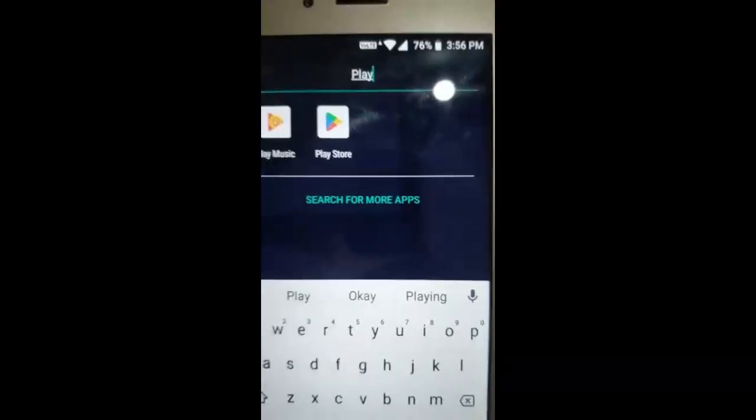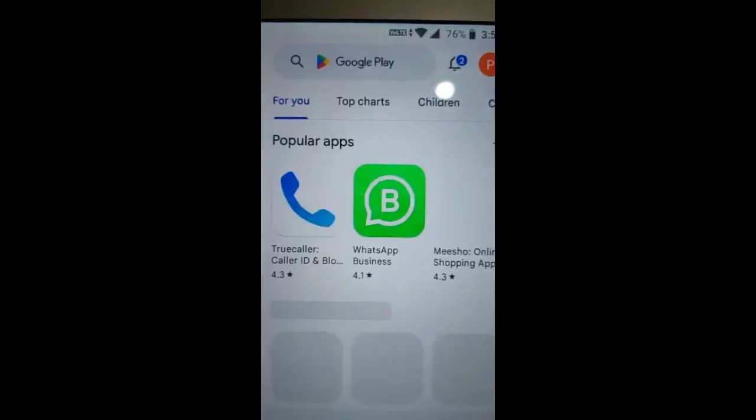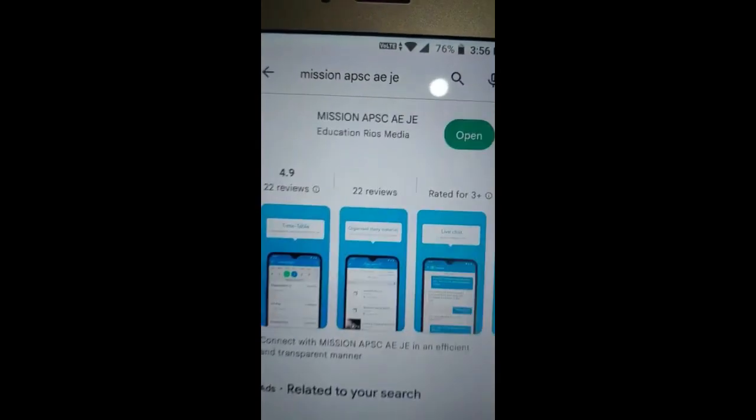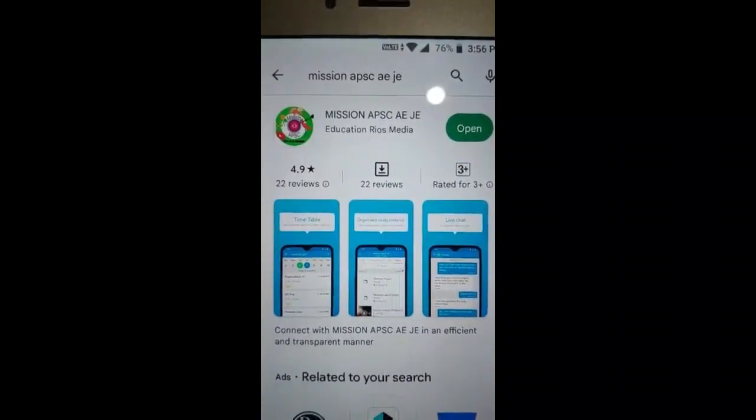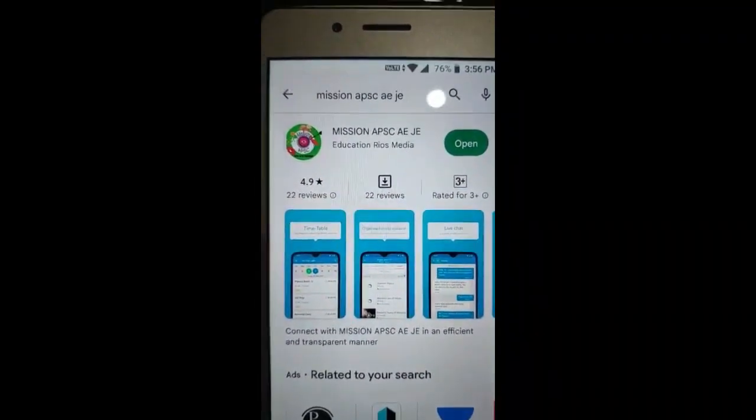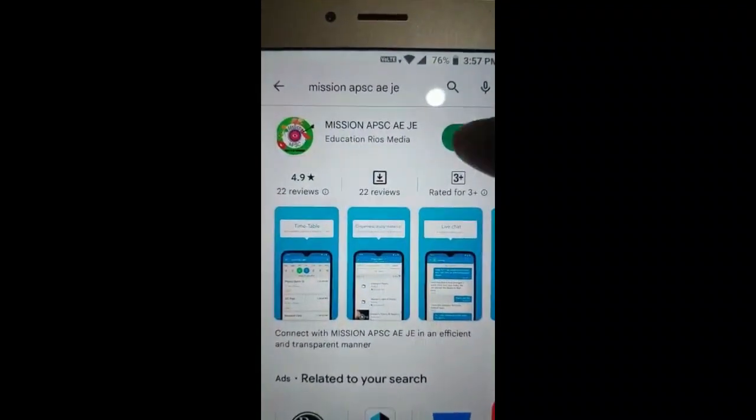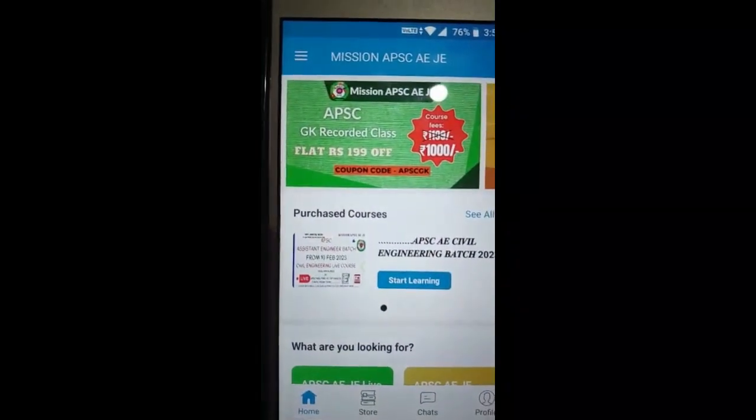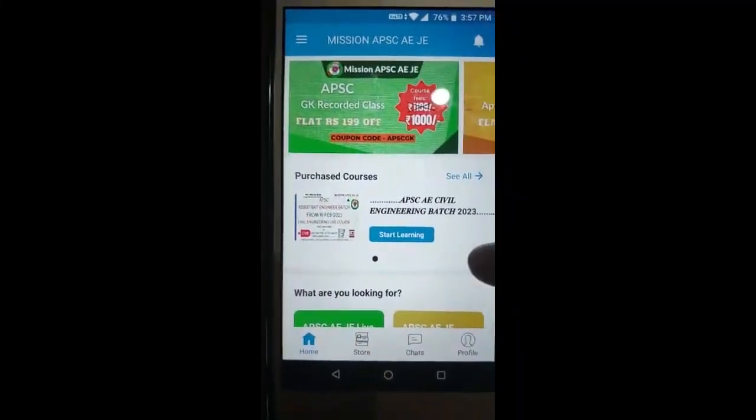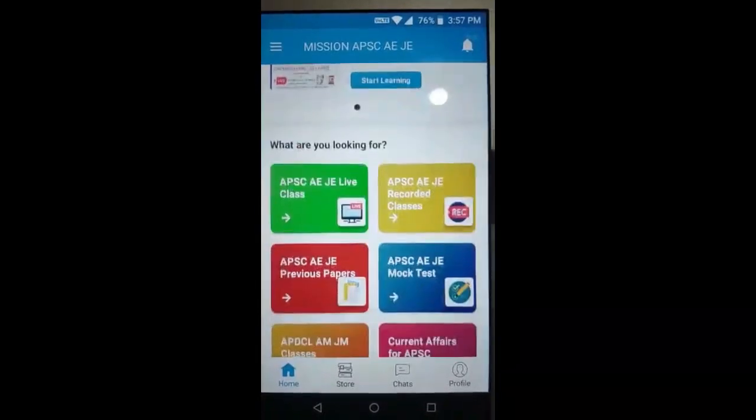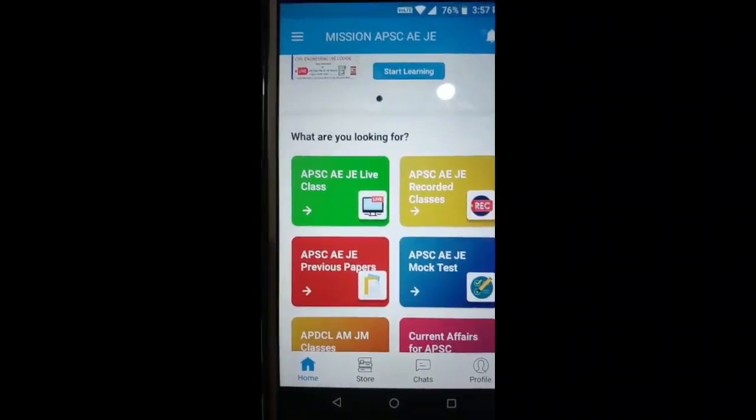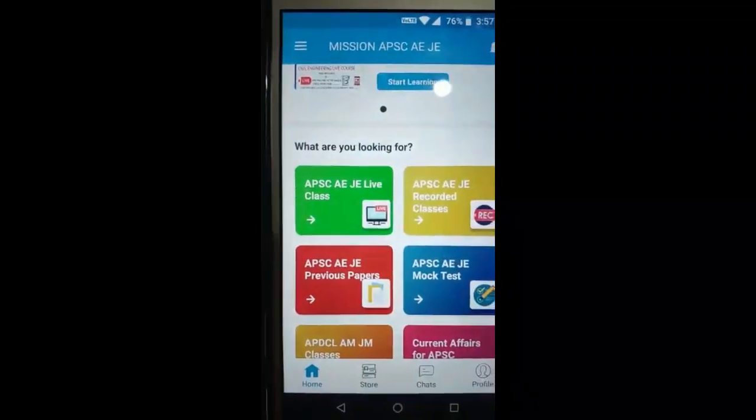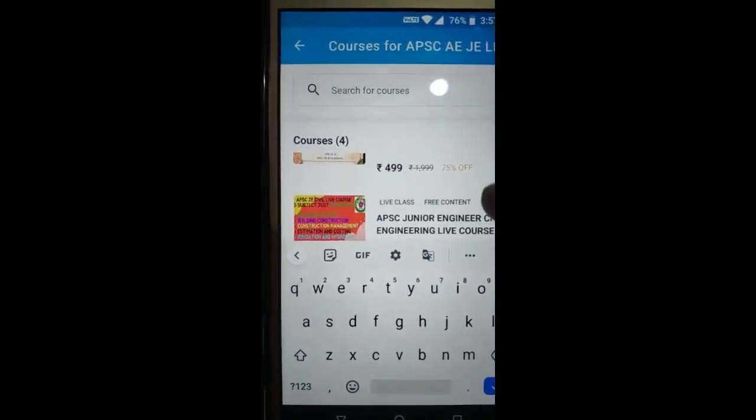First, go to the Play Store. Search as Mission APSC-AZ. Download and install the app. After installation, open the app. Sign up as a student. In the home section, scroll down to the category of classes: APSC-AZ Life Classes, APSC-AZ Recorded Classes, APSC-AZ Previous Papers, Mock Tests. Scroll down to Life Classes.